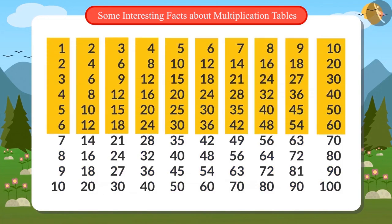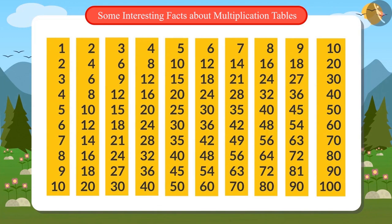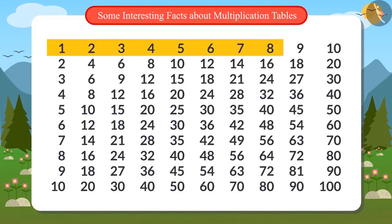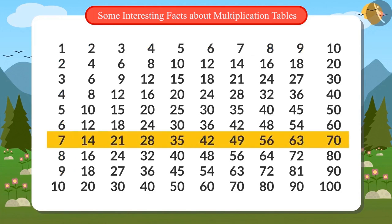And reading the lines top to bottom also gives the table of a number. Oh yes! This is an amazing pattern. Like the first line from left to right is table for 1, so is the first line from top to bottom. Similarly, the seventh line from left to right is the table of 7, and so is the seventh line from top to bottom.